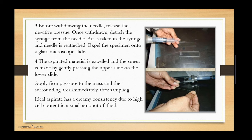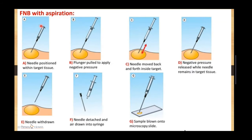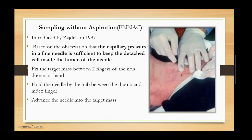This is the diagrammatic representation: the needle is placed inside the target tissue and aspirated, the negative pressure is released, the needle is withdrawn and detached from the syringe, air is drawn into the syringe, and the sample is blown onto the microscopic slide.